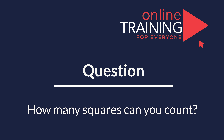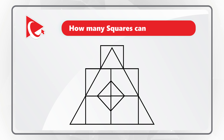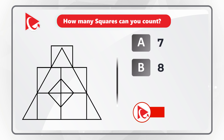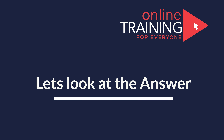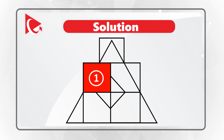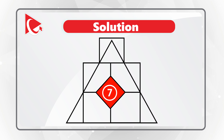Here's an interesting question where you need to correctly count the number of squares in the picture. Choose from: choice A 7 squares, choice B 8 squares, choice C 9 squares, and choice D 12 squares. Make sure to count inside and outside squares. I counted 7 squares in the picture — here are all the squares: one, two, three, four, five, six, and seven.